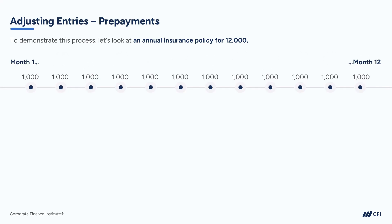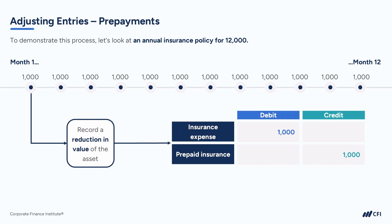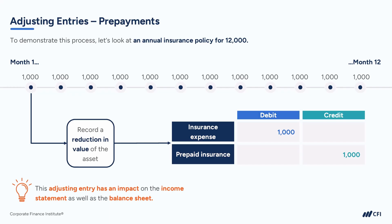As each month goes by, a portion of that insurance policy expires and can no longer be considered an asset. To account for this, we need to record the expired amount as an expense for that month. This is done by debiting the insurance expense and crediting the prepaid insurance account. It's important to note that this adjusting entry affects both the income statement and the balance sheet. The income statement is impacted because now there is an insurance expense increasing, which is going to decrease our profitability. The balance sheet is impacted because the prepaid insurance asset account decreases each month as the insurance policy expires.